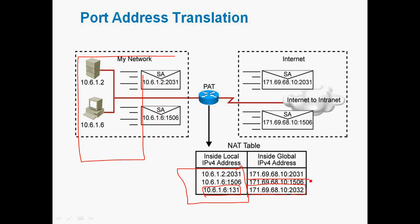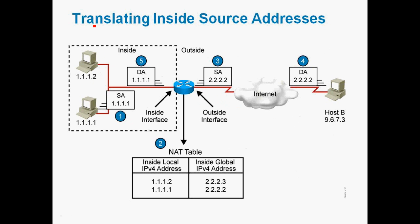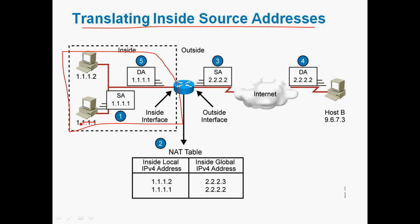All private IP addresses can be mapped into a single public IP address. For translating inside source address, in the inside network we use source IP addresses 1.1.1.1 and 1.1.1.2. The source communicates with destination 9.6.7.3. The packet comes to the router, which checks the NAT table — 1.1.1.1 is translated into 2.2.2.2. After passing through the router, the source IP address is automatically changed to 2.2.2.2, then it goes to the internet.